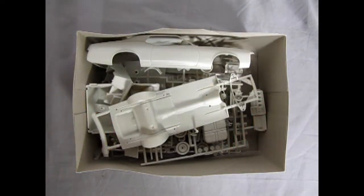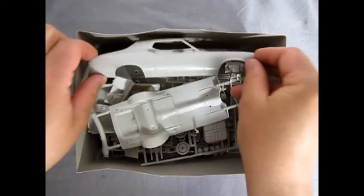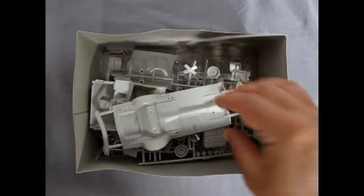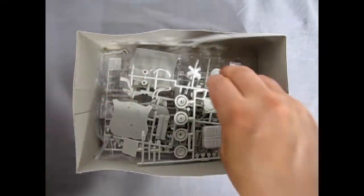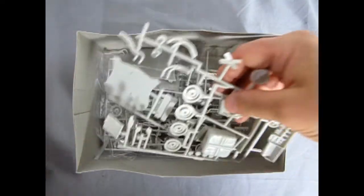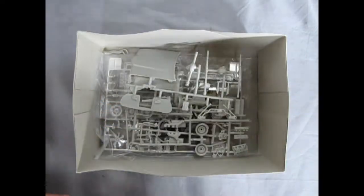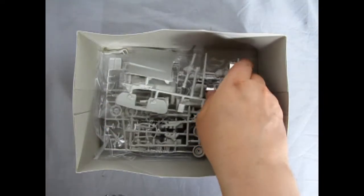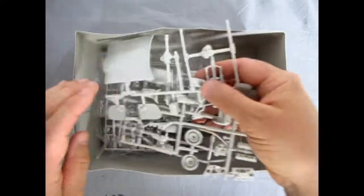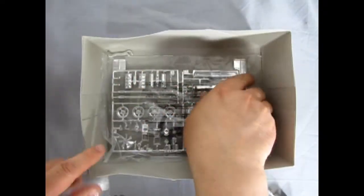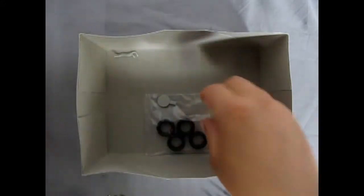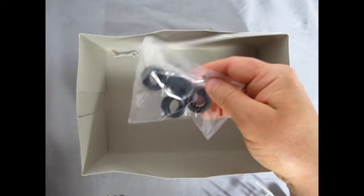Then you see all the great components in here like our body, our chassis, the interior, engine components and this great big thing here. We'll check that out in a bit. And then all of the other goodies and details as well as we got our glass in a bag and our chrome in a bag and our tires down below.